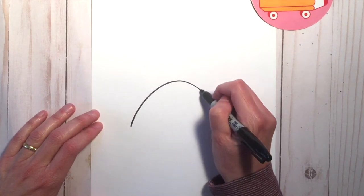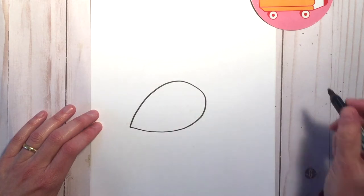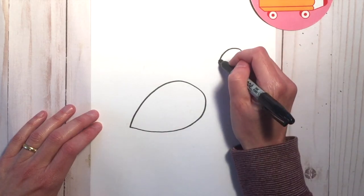Around the center of the paper, you're going to make a teardrop shape. Above it and to the right, you're going to make a circle.